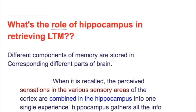What is the role of the hippocampus in retrieving long-term memory? Different components of memory are stored in corresponding different parts of the brain. When it is recalled, the perceived sensations in the various sensory areas of the cortex are combined in the hippocampus into one single experience. The hippocampus gathers all the information from these areas and memory is retrieved.